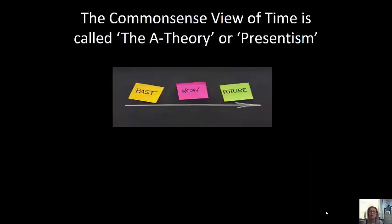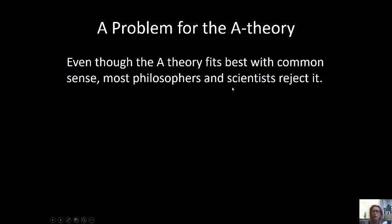So the common-sense view of time is also called the A-theory of time, or another way, the thing that some people call the common-sense view of time is presentism. I think presentism is a common-sense theory of time, or the A-theory. Basically, the past is gone now. The only thing that's really real is now. The only thing that really exists is now, and the future is yet to come, right? That's really a common-sense view. Even though the A-theory fits best with common sense, most philosophers and scientists reject it. Strange.